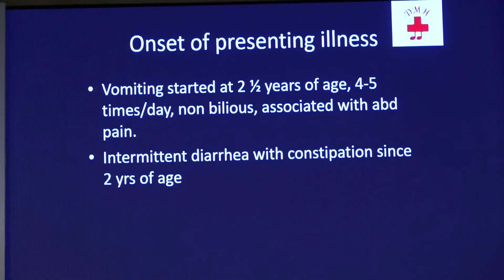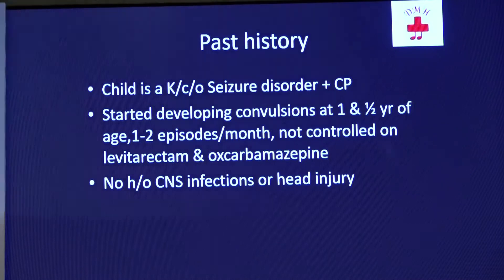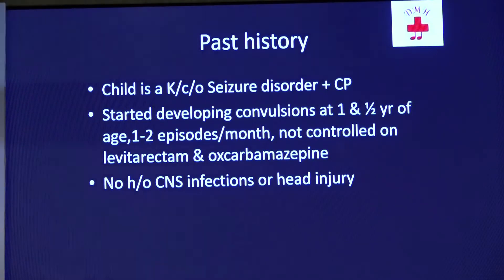He had intermittent diarrhea with constipation since two years of age. The child is a known case of seizure disorder as well as cerebral palsy. He started developing convulsions at one and a half years of age, one to two episodes per month, which were not controlled on levetiracetam as well as oxcarbazepine. There was no history of any CNS infection or head injury.